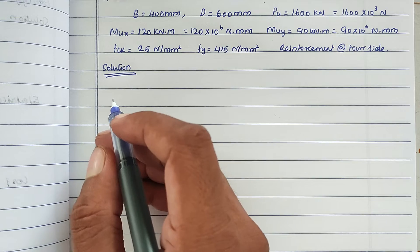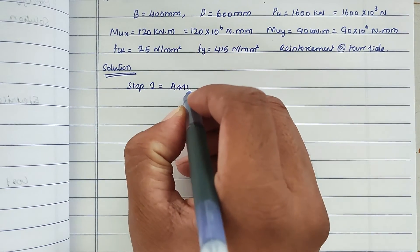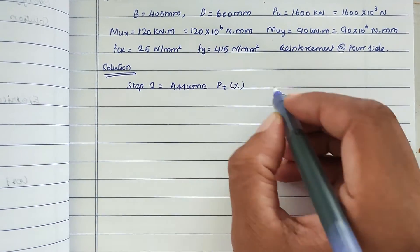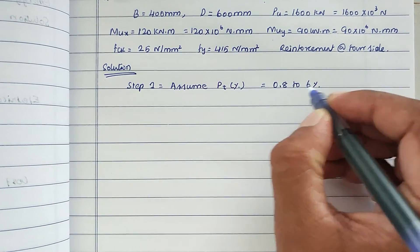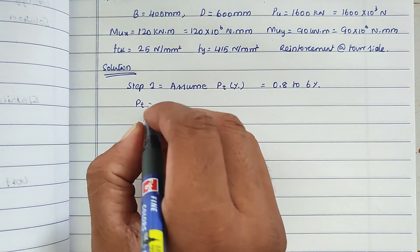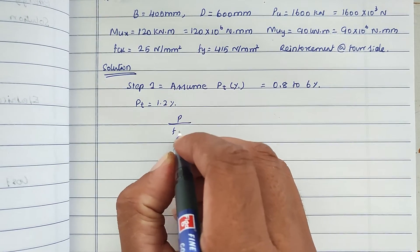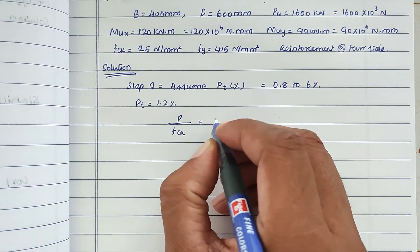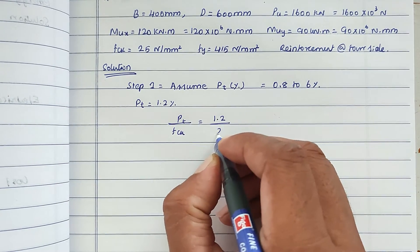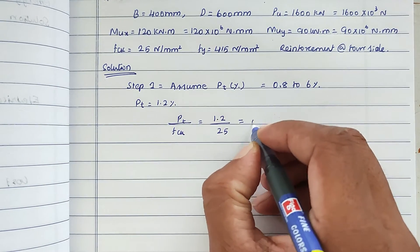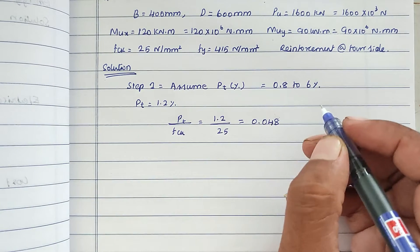Step 1: Assume PT percentage. We assume PT = 1.2%. Then P/fck = 1.2 / 25 = 0.048.